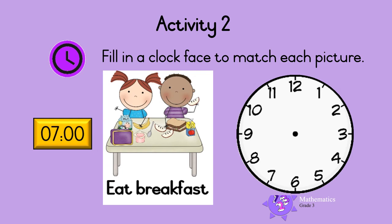Now you try. It is seven o'clock in the morning and time for you to eat breakfast. Show this time on the analog clock. The short hour hand must point to seven, and the long minute hand must point to twelve, which is zero minutes. Well done!